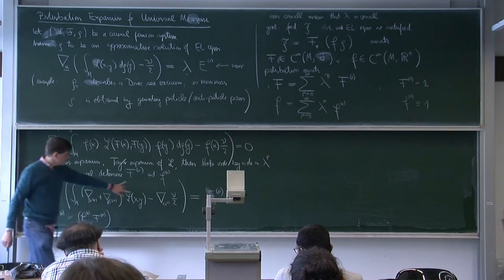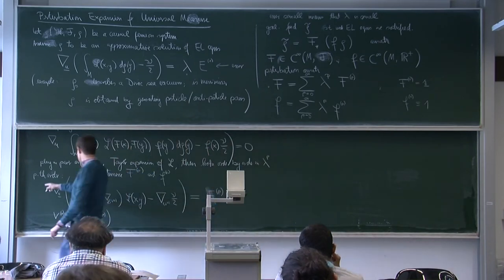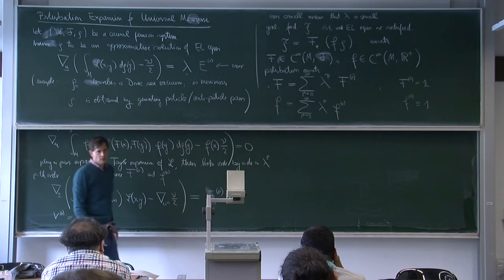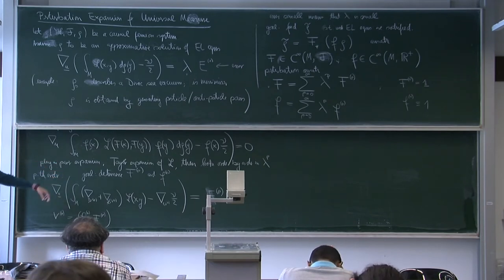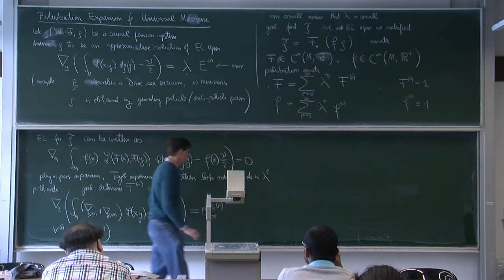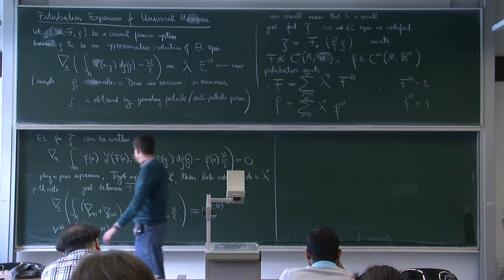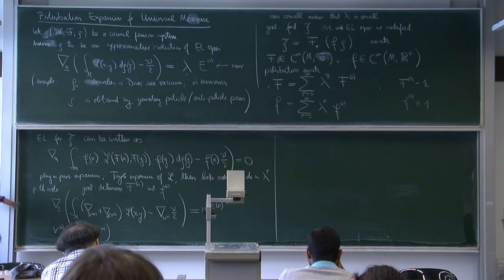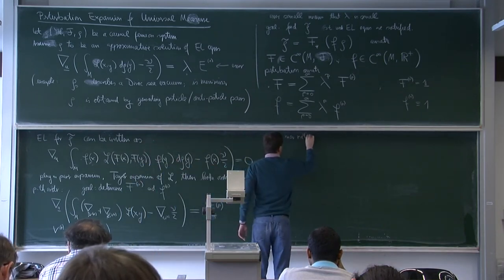The left side just looks like the linearized field equations, and on the right side we have something known as an inhomogeneity — this is just the usual structure one has in a perturbation expansion. The goal is to invert this: to find a kind of inverse, a Green's operator.